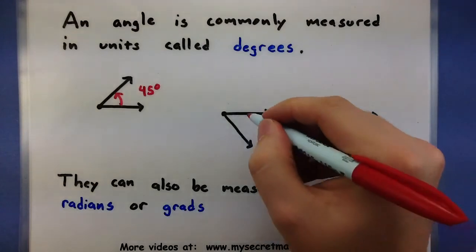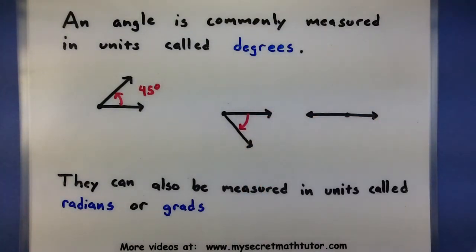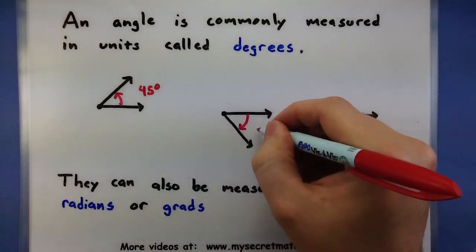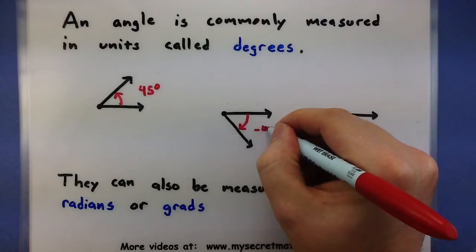You can also go the other direction with these angles. And when you go clockwise, then you get a negative degree. So maybe something down here is maybe negative 45.